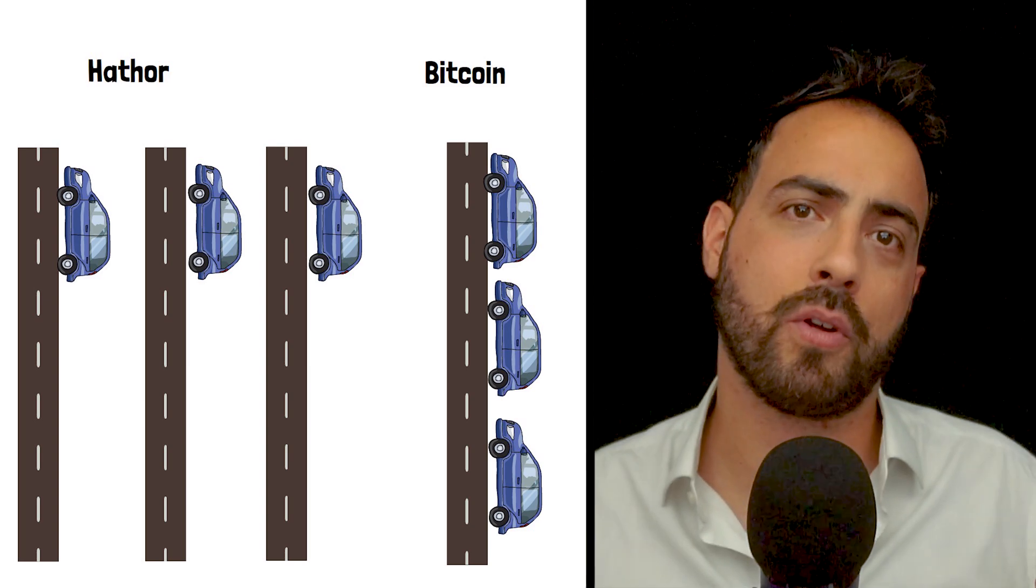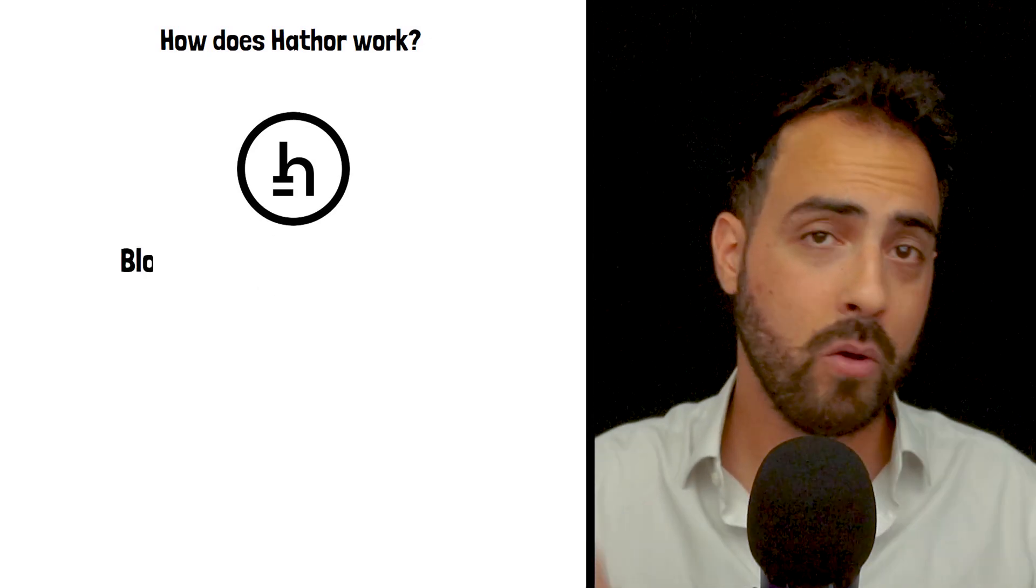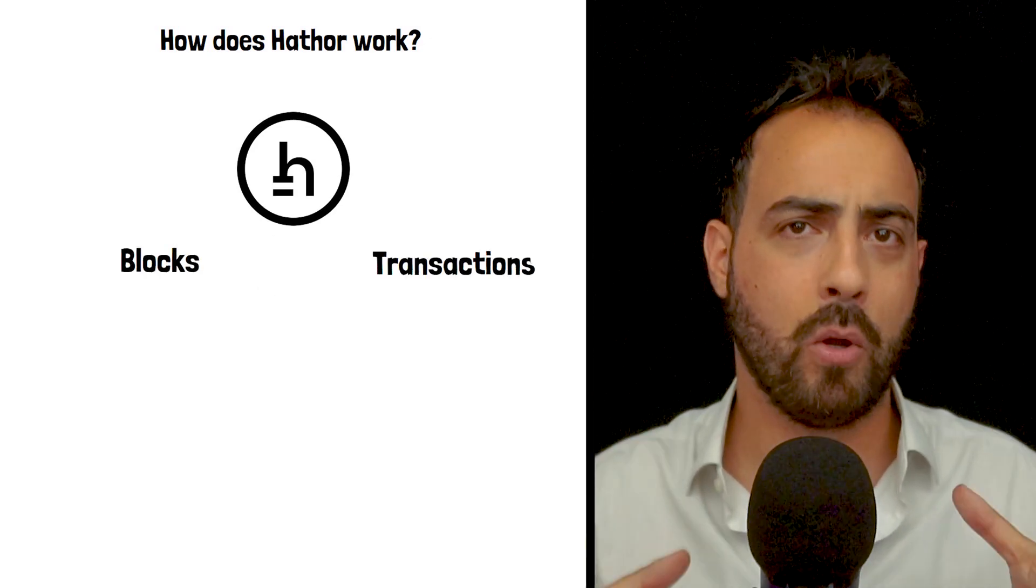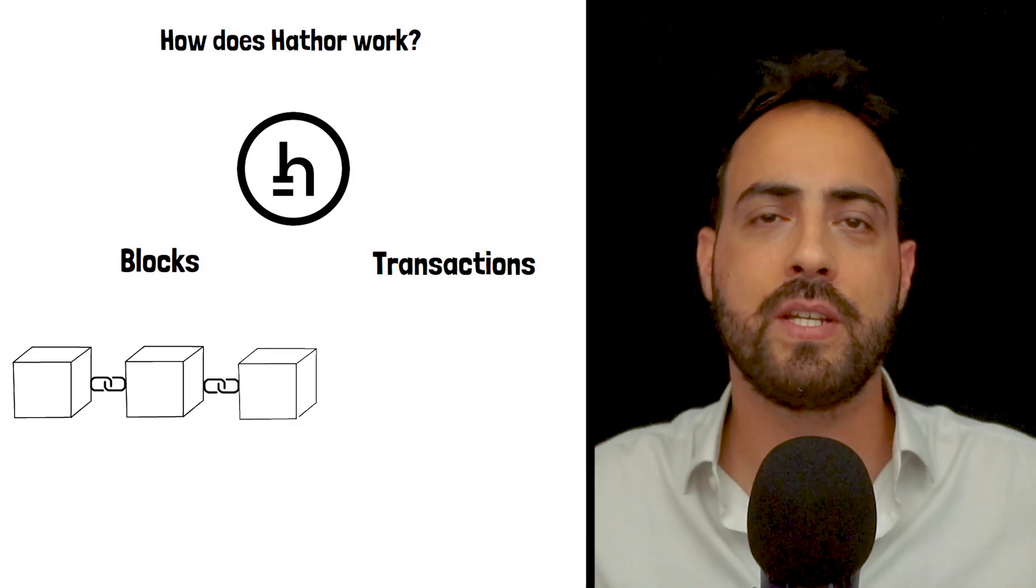So, how does it actually work? In Hathor's system, there are two types of structures, blocks and transactions. Blocks are similar to traditional blockchain blocks. They are mined through proof of work and form a chain.